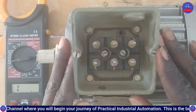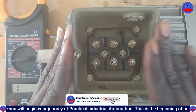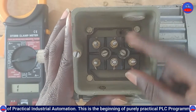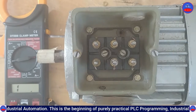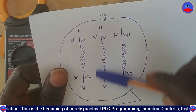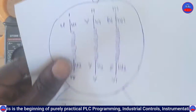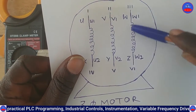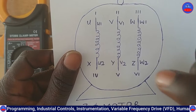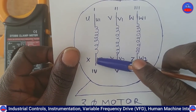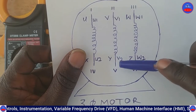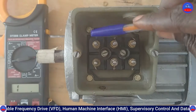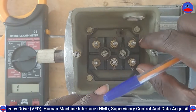This is our three-phase motor terminal block. On this terminal block we have six terminals. So let's see why we have six terminals. These are the windings inside of this motor. We have winding one, winding two, and winding three. Winding one consists of two terminals, winding two consists of two terminals, and winding three consists of two terminals — one, two, three, four, five, six. That is why we have the six terminals here.